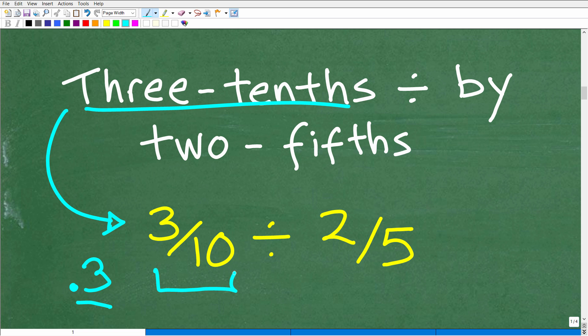So don't be confused with that. Just remember there is a relationship between decimals and fractions and, of course, place value. All right, so we have three-tenths divided by, so here is that division symbol, by two-fifths.